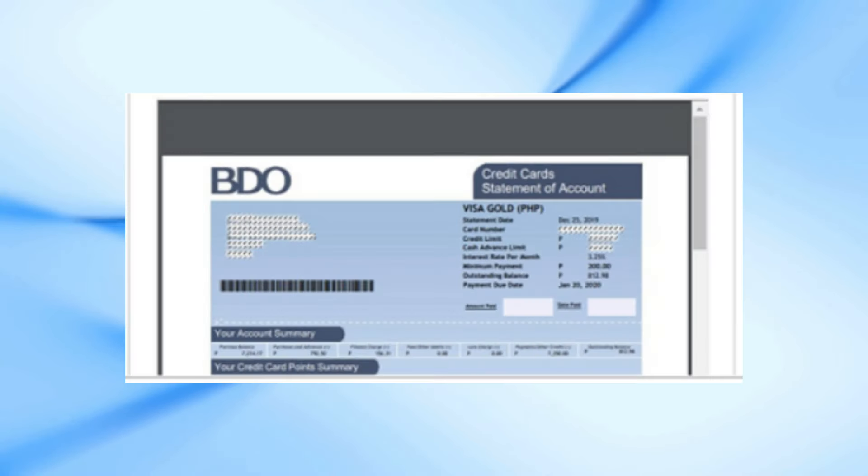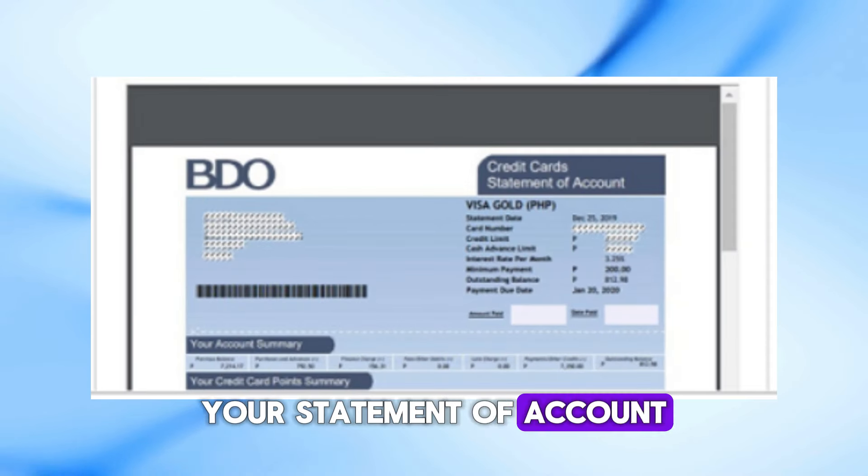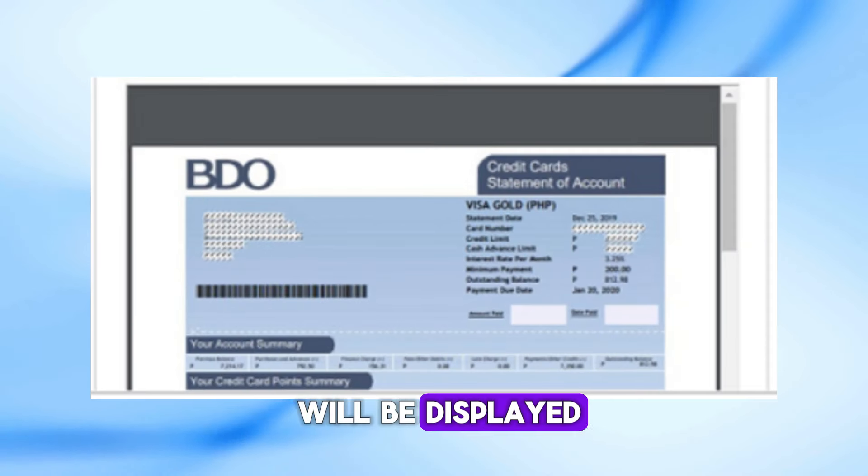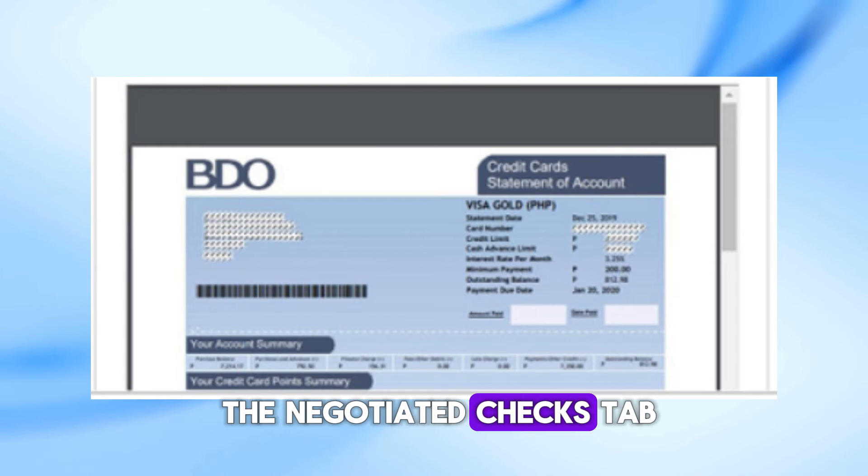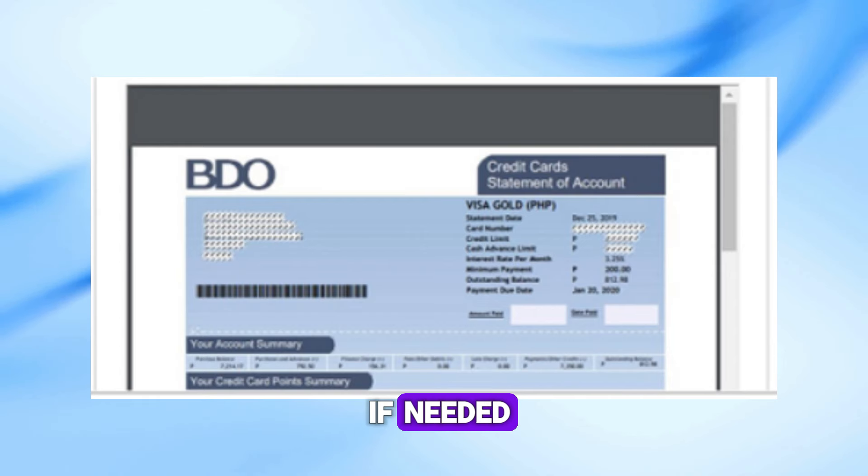Step 5. Your Statement of Account will be displayed. You can also check the Negotiated Checks tab if needed.